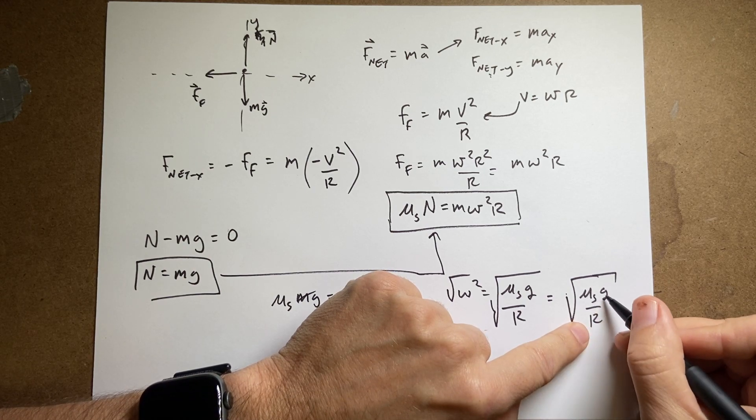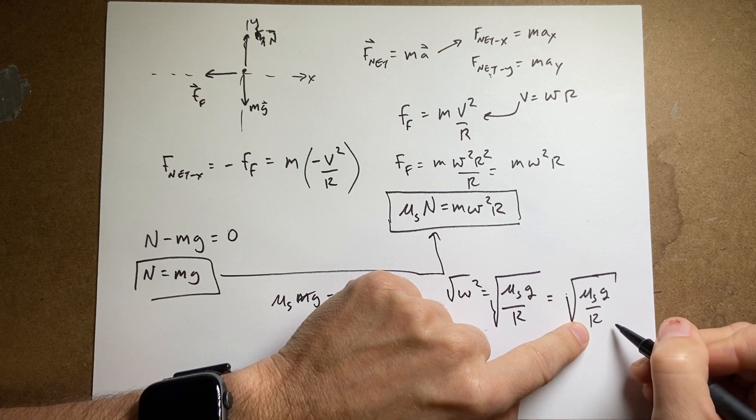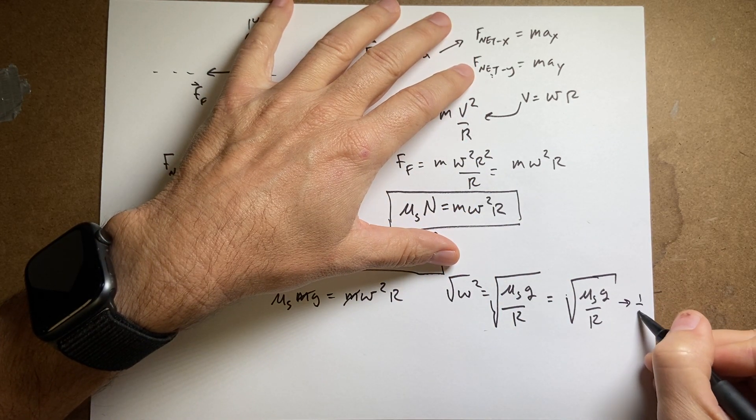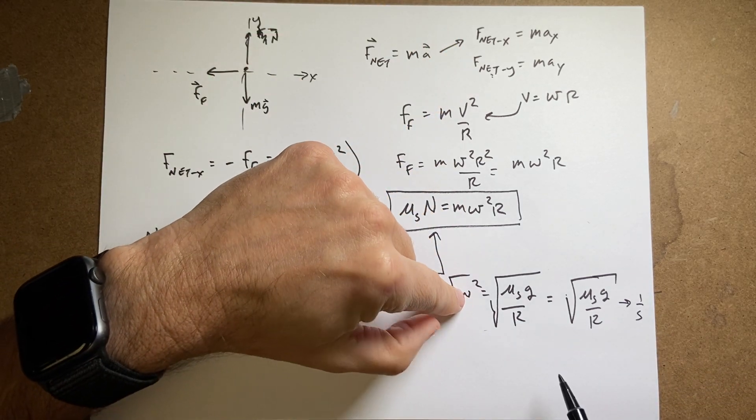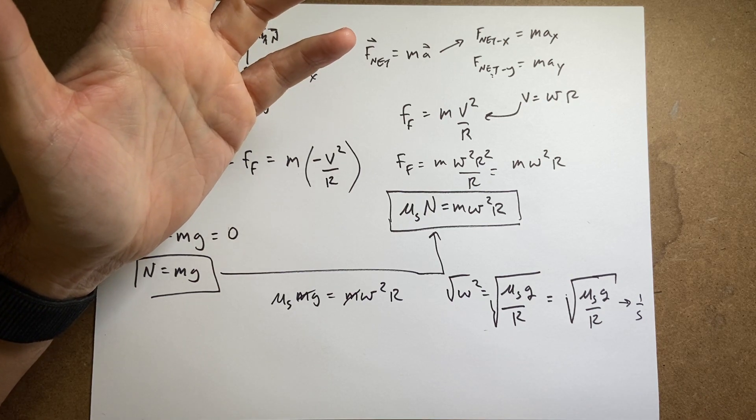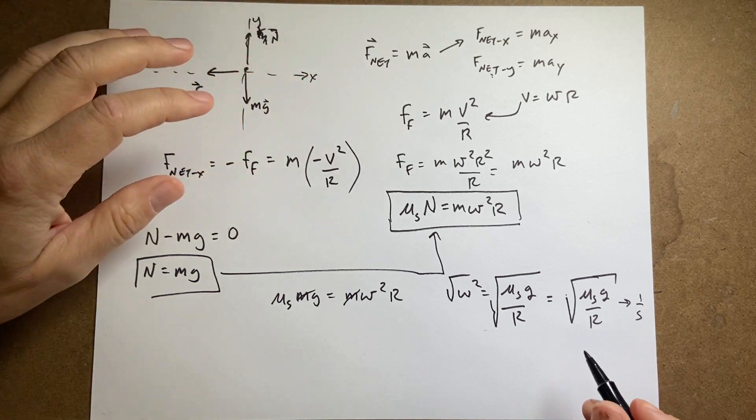Meters per second squared divided by meters. So I get 1 over second squared. Then I take the square root and I get units of 1 over seconds. And that is the right unit for omega in radians per second. Radian isn't a real unit. It's a placeholder unit. So this would be the same as radians per second.